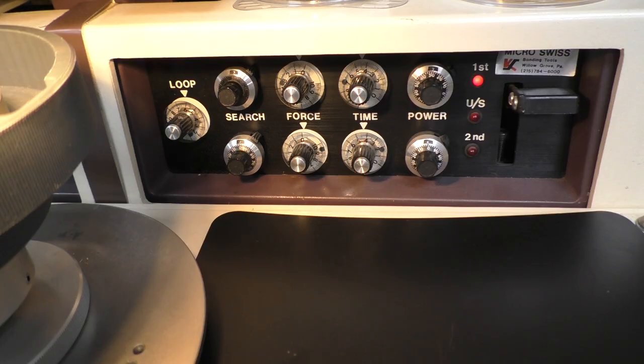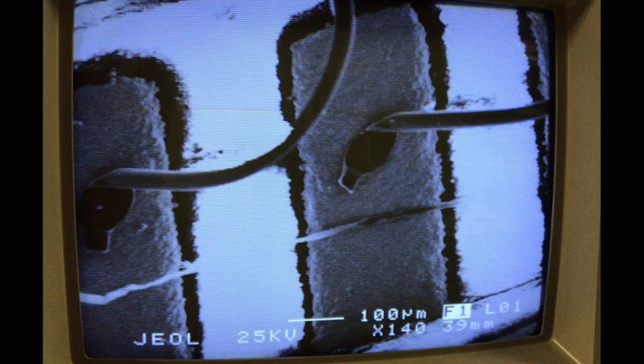On the right we have the settings for the actual bonds. The top is the first bond, the bottom row of knobs is the second bond, and on the left we have the loop control which is how high it moves the tool in between them so you can make a loop in the wire and not short out the wire against the surface of the chip. The knob labeled search is the search height which it goes to before you make the first and second bonds. Then we have force, time, and power which are pretty self-explanatory.